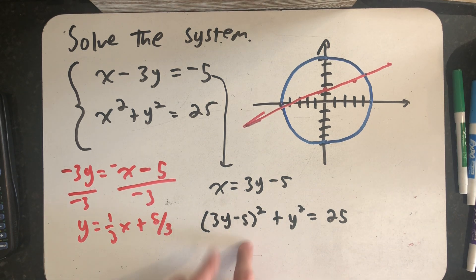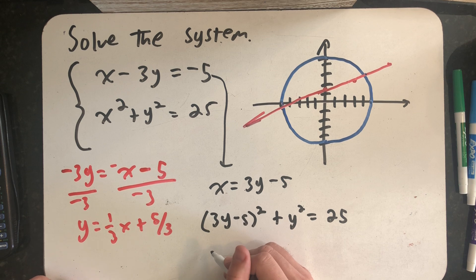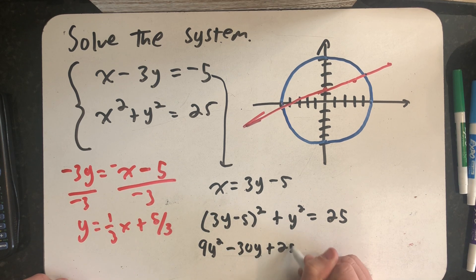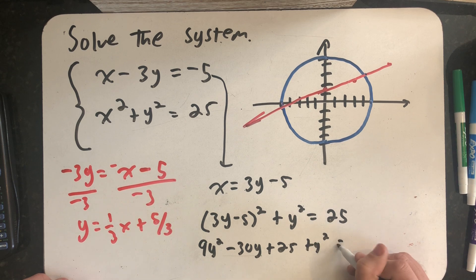And so I need to multiply this out. So I get 9y² minus 30y plus 25 plus y² equals 25.